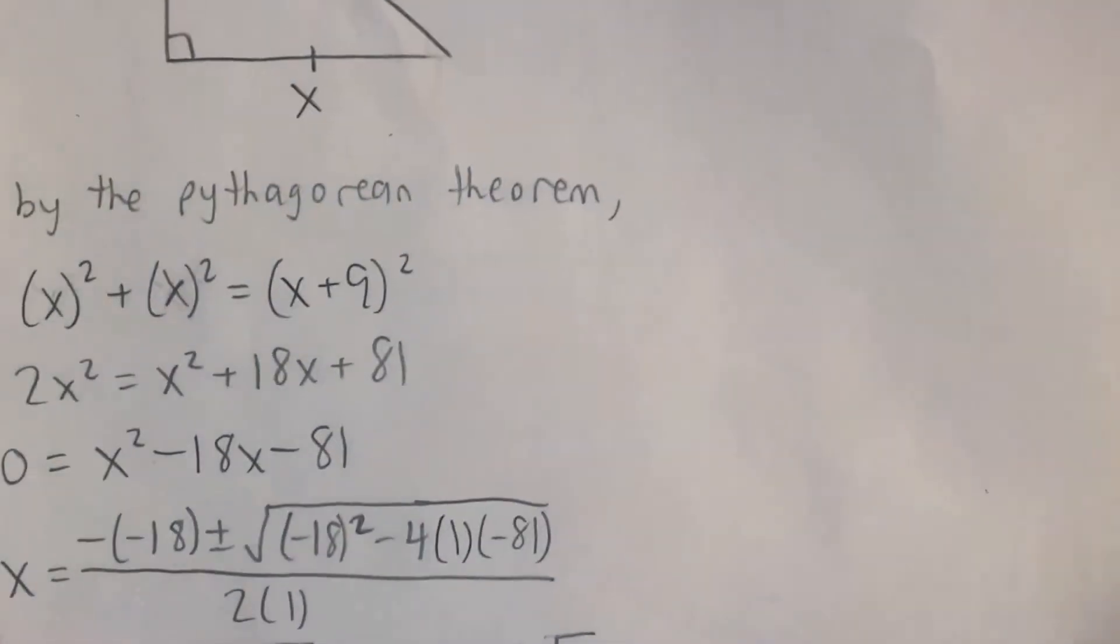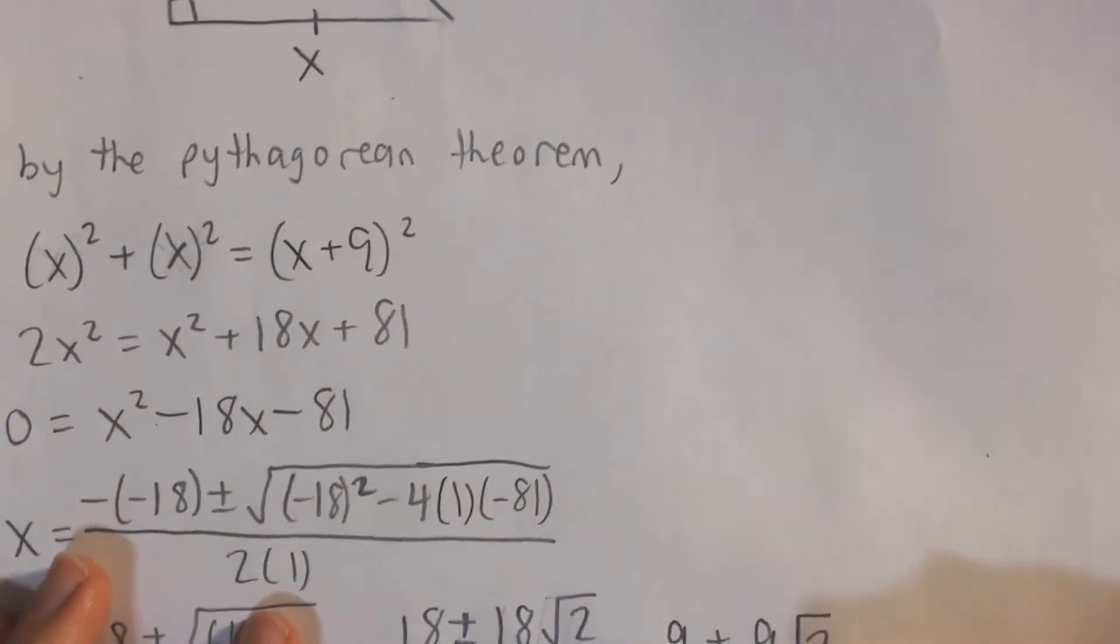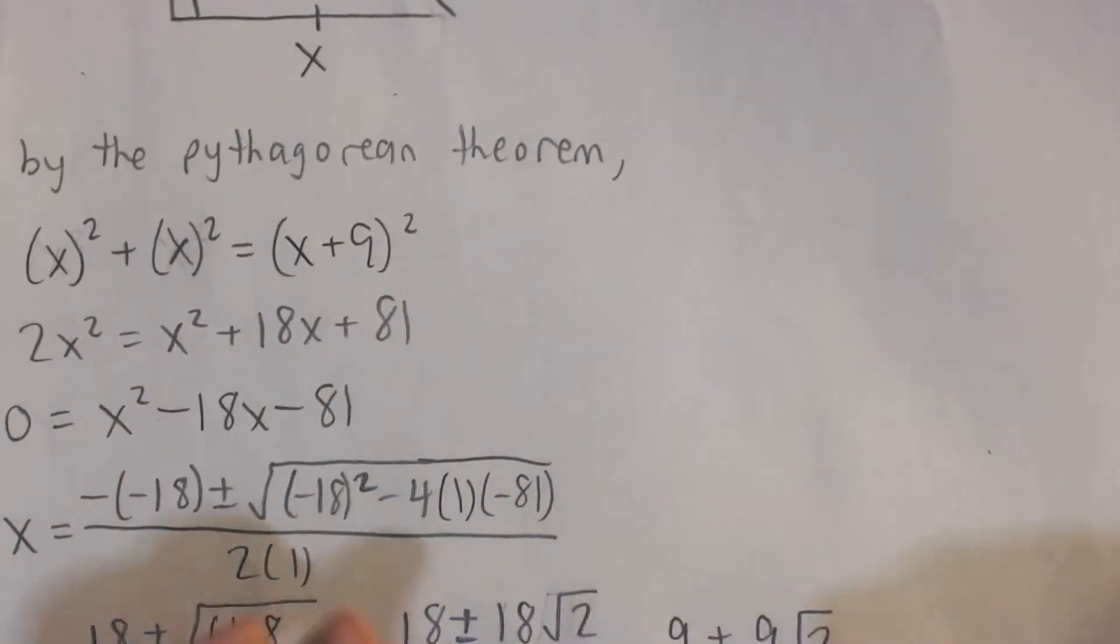And so if we do the math here, on the left side, we're going to get x squared plus x squared. That's 2x squared. On the right side, if you expand this binomial, x plus 9 times x plus 9, you're going to get x squared plus 18x plus 81.